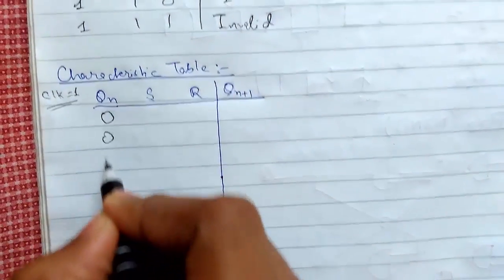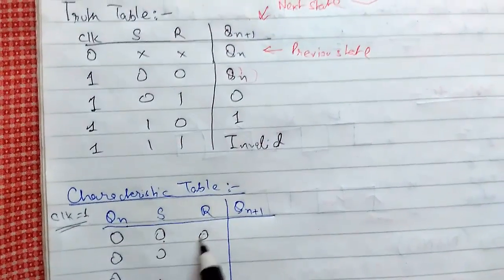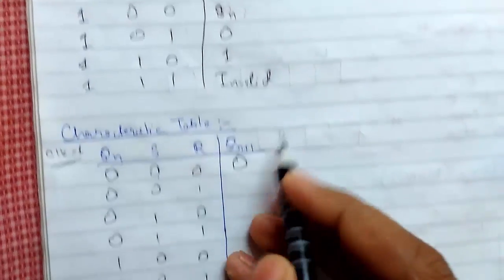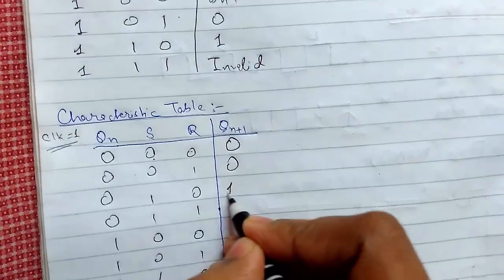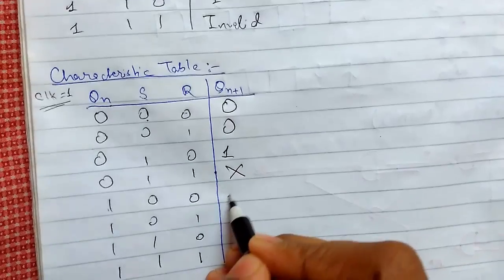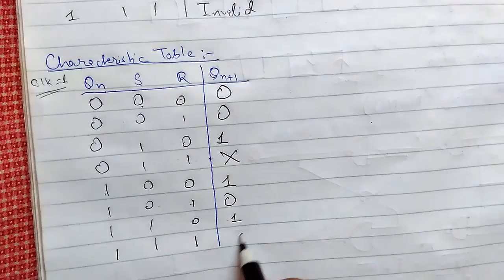These are the possible input combinations. For S and R equal to 00, it gives the previous output qn; since qn is 0, the output is 0. For 01 it is 0, for 10 it is 1, and for 11 it is not used. For 00 again with previous state 1, the output is 1; for 01 it is 0, for 10 it is 1, and for 11 it is invalid.